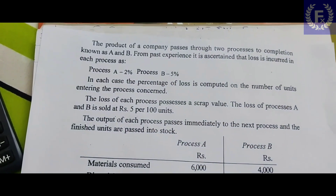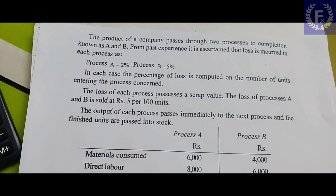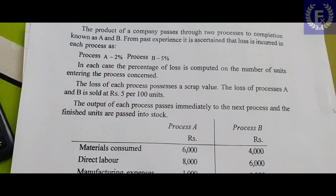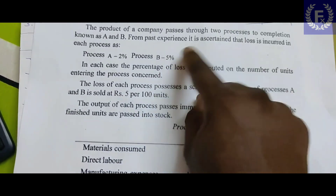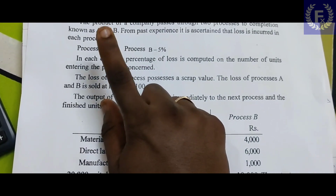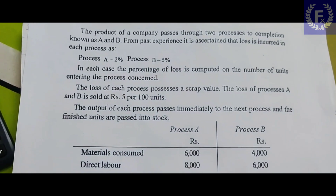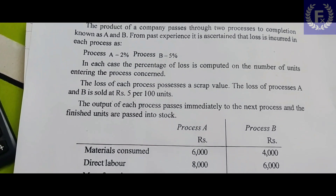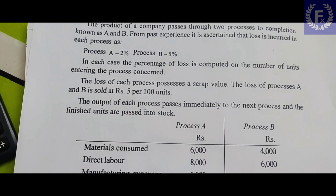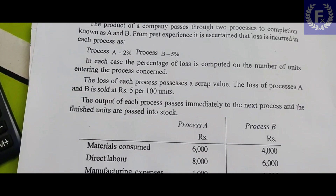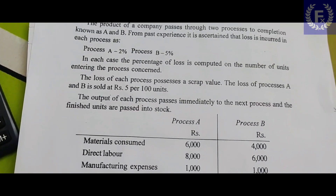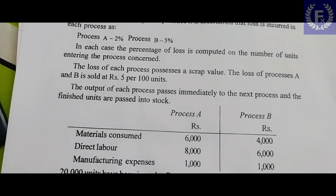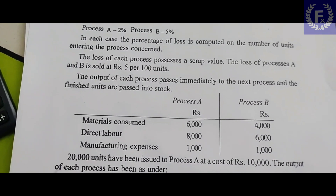A product of a company passes through two processes to completion, known as Process A and Process B. From past experience, it is ascertained that loss is incurred in each process. Process A has a 2% normal loss and Process B has a 5% normal loss. The percentage of loss is computed on the number of units entering each process. The loss of each process has a scrap value — the loss of Process A and B is sold at rupees 5 per 100 units. The output of each process passes immediately to the next process, and the finished units from Process B are passed into stock.